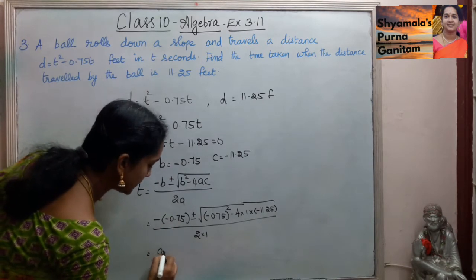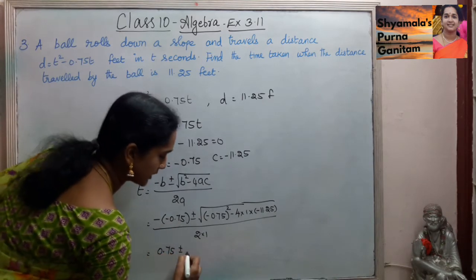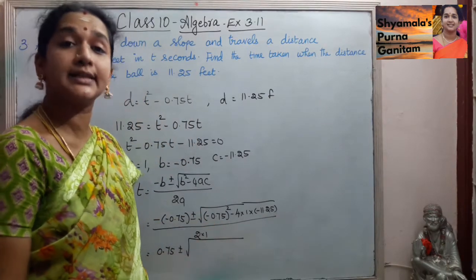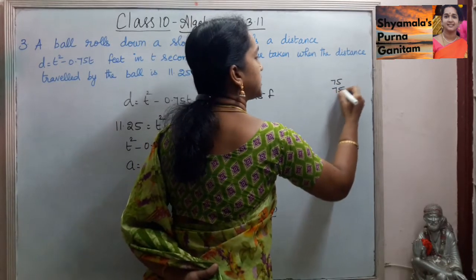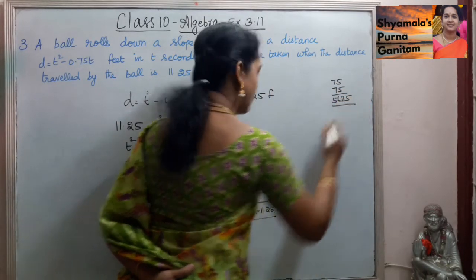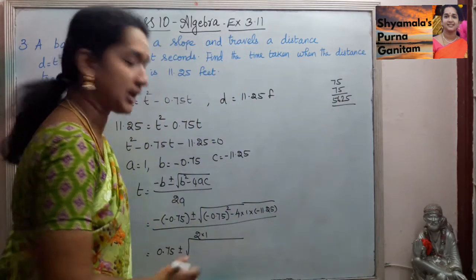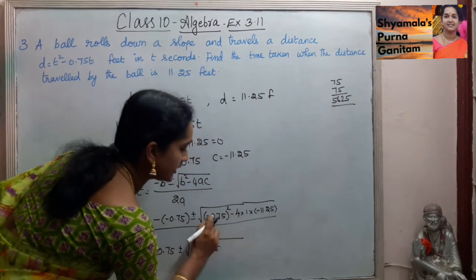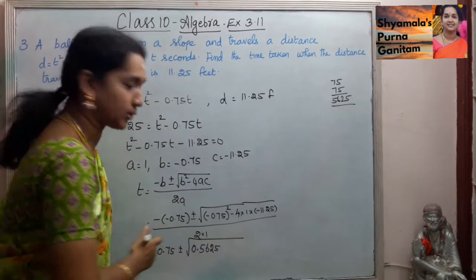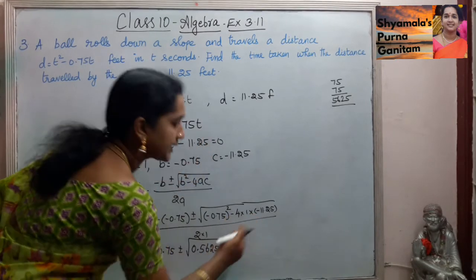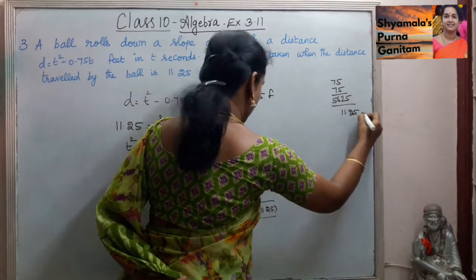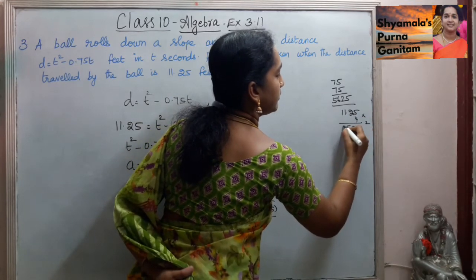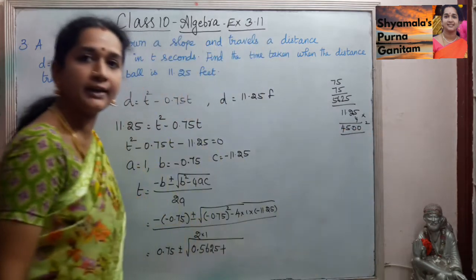So this equals 0.75 plus or minus root of — we find 0.75 squared: 75 into 75 is 5625, and with 2 decimal places that is 0.5625. Then minus into minus is plus, and 11.25 into 4: 5 fours are 20, so 4 into 11.25 gives 45.